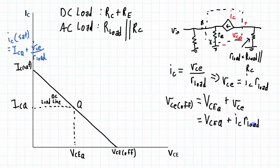Rewriting VCE in terms of IC and R load we get this expression. And I can see that the amount that my collector current can change from the operating point is going to be ICQ.